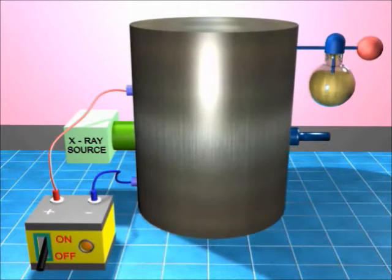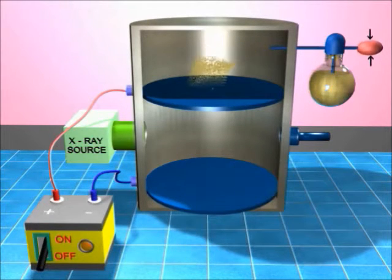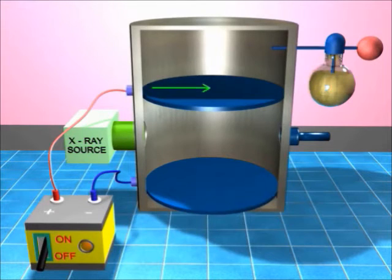Now let us see what we have inside this container. There are two plates over here. The oil is sprayed on the top like this. The top plate has a small hole over here.